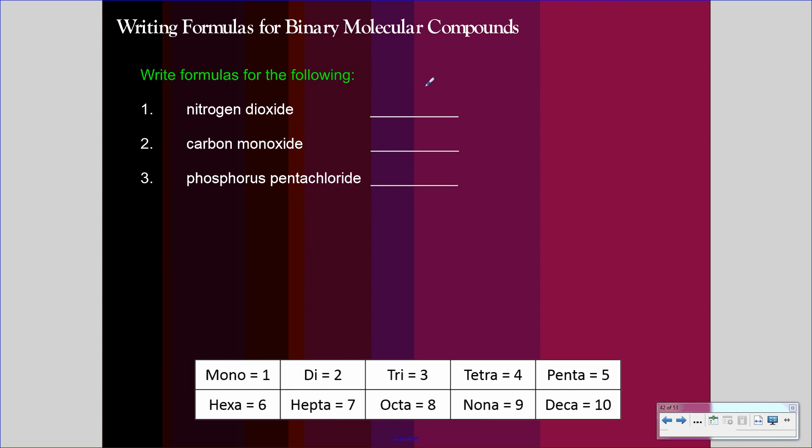So let's write the following three. Nitrogen dioxide. Well, we've got nitrogen, we have oxygen. So how many nitrogens are there? The absence of a prefix tells you there's one, so we'll just leave that as is. Dioxide, di means two. NO2.